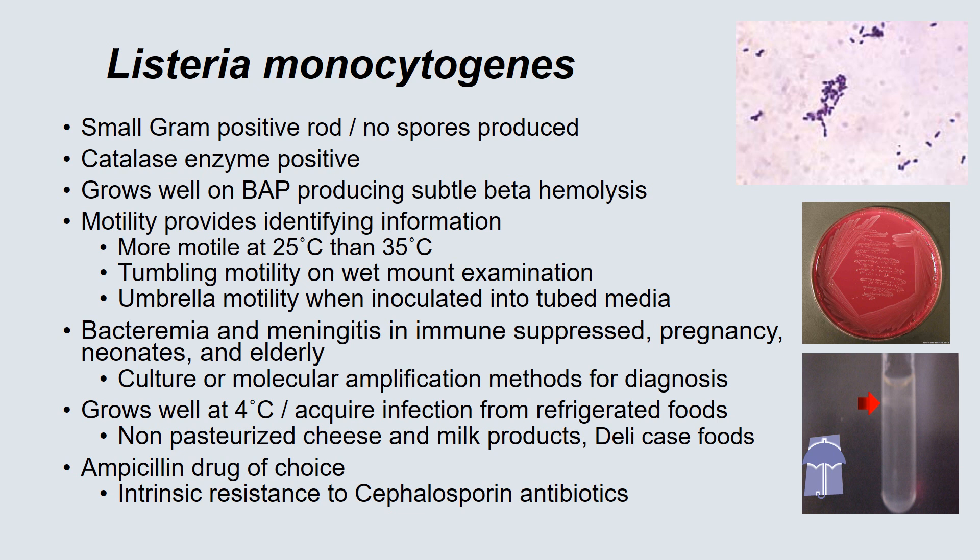Listeria monocytogenes is a very important organism for public health. It is a small gram-positive rod that does not produce spores, and is catalase enzyme positive. It grows very well on blood agar, producing subtle beta-hemolysis, with a colony that looks very similar to beta-strep group B. Motility provides identifying information — it is more motile at 25 degrees than at 35 degrees, as this organism likes to grow at colder temperatures.